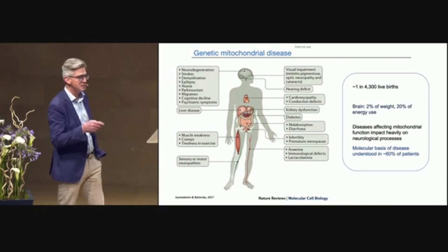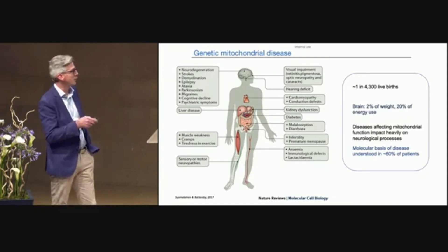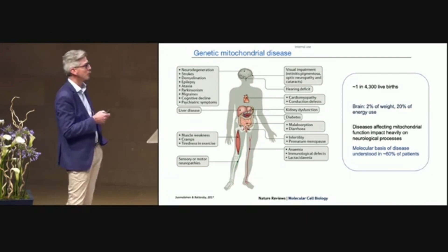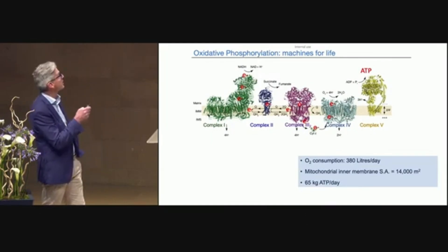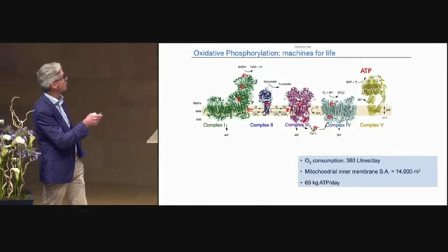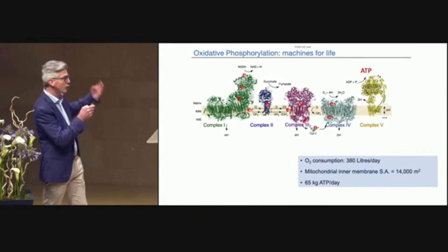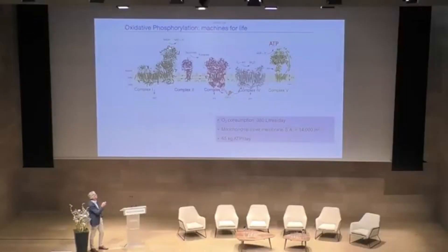We understand the molecular basis of disease from genetic mutations in about 60% of patients, but we're still working to understand the effects of some gene mutations on mitochondrial defects. Most defects come from affecting the protein machines in the inner membrane of mitochondria that drive ATP production — the oxidative phosphorylation machines or electron transport chain. These take electrons from NADH, compounds produced through utilization of carbon from the foods we eat, and drive them through a series of complexes before oxygen is converted to water.